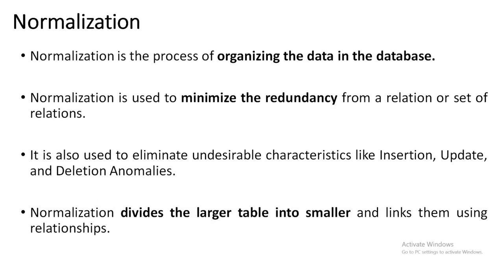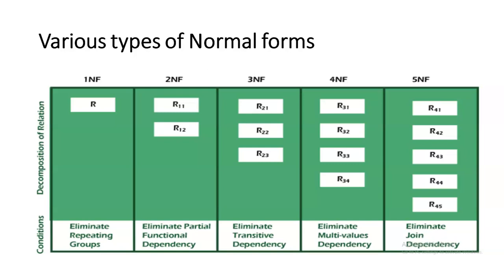How is normalization done? The larger table will be divided into smaller ones, and the smaller or multiple tables will be joined or linked together with a relationship by using a foreign key. There are various types of normal forms: 1NF, 2NF, 3NF. After 3NF, we will be seeing BCNF which is Boyce-Codd Normal Form, and 4NF and 5NF. In this lecture, we will be covering 1NF, 2NF and 3NF.